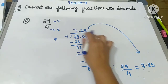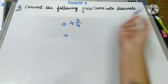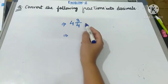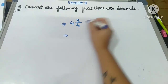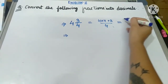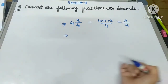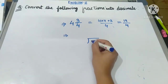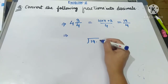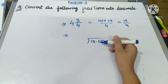Now if there is a mixed fraction, how do we convert it into a decimal? For example, 4 and 3 upon 4: first convert it to an improper fraction. Multiply 4 × 4 = 16 and add 3 to get 19, keeping the denominator 4. So it becomes 19 upon 4. Now we can convert this using the long division method, writing 19 with two zeros as 19.00.